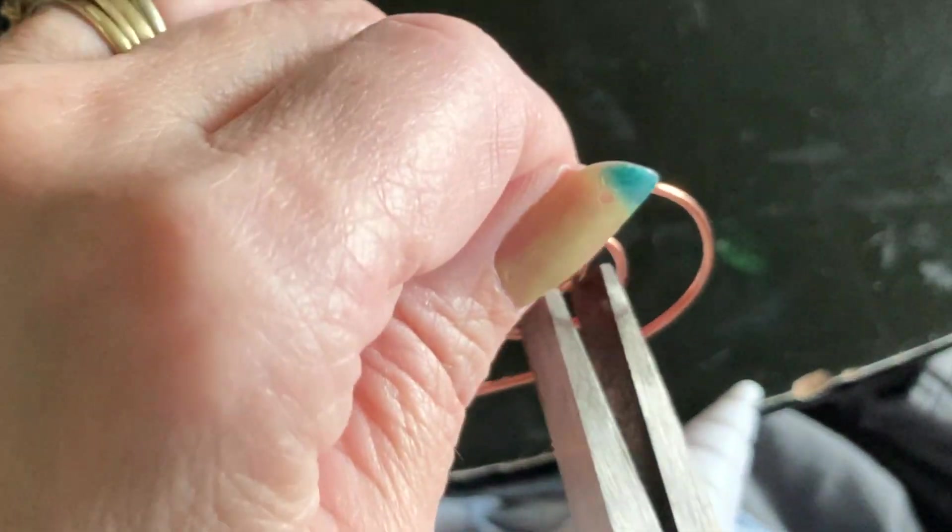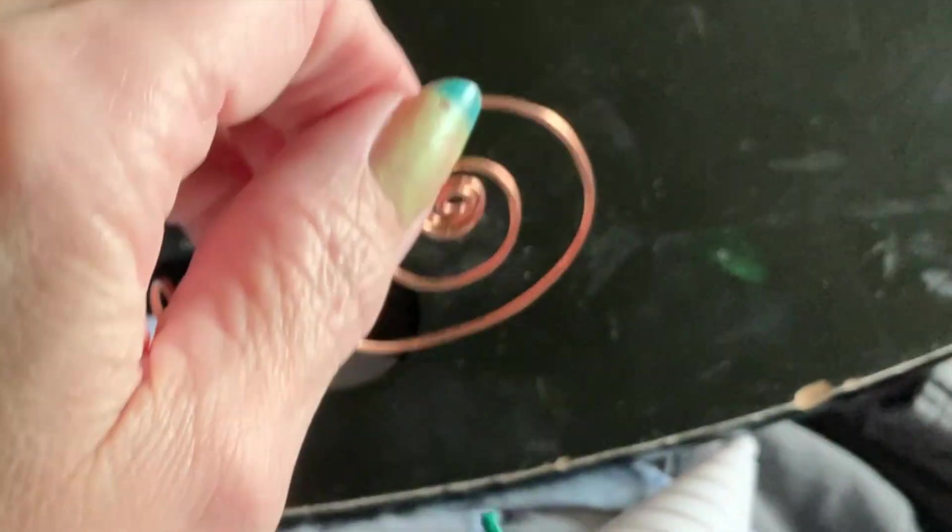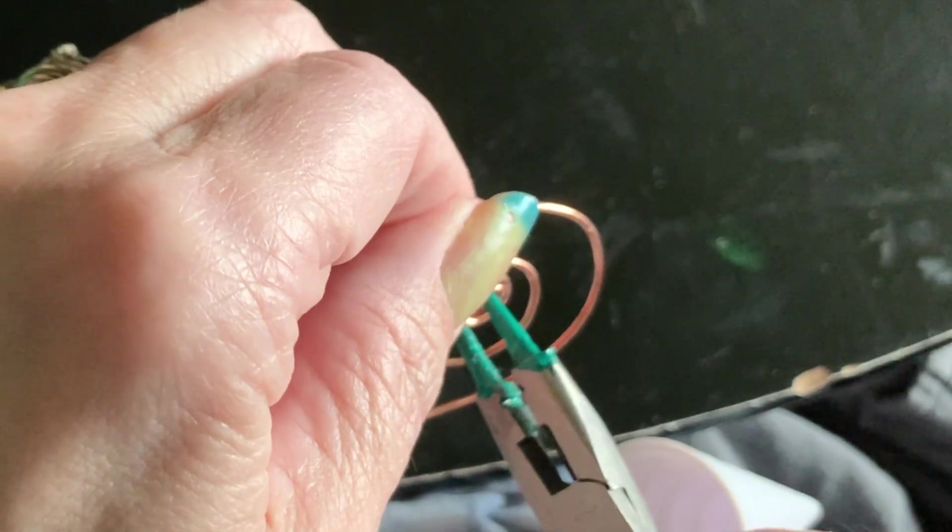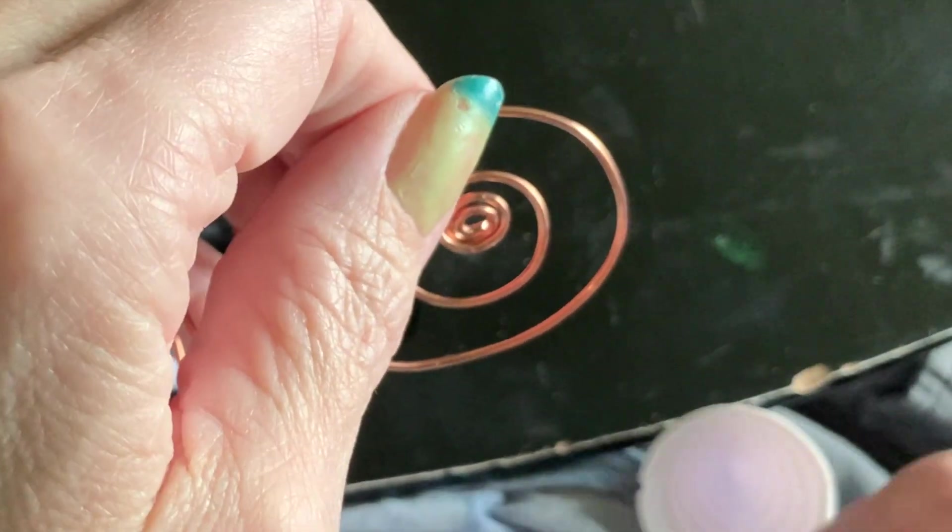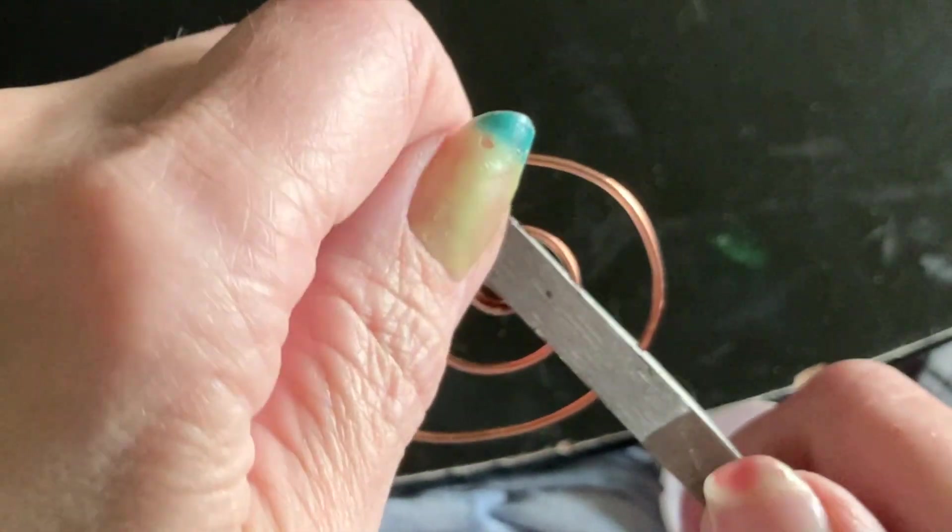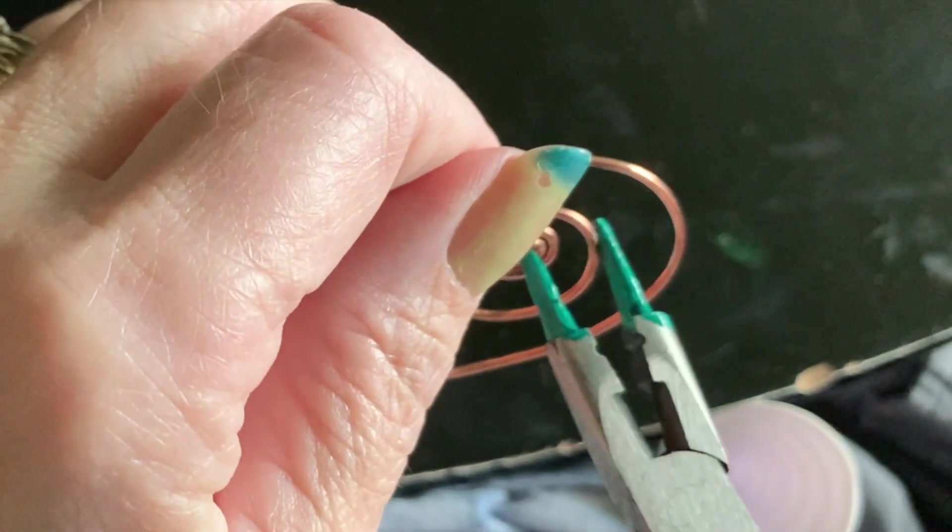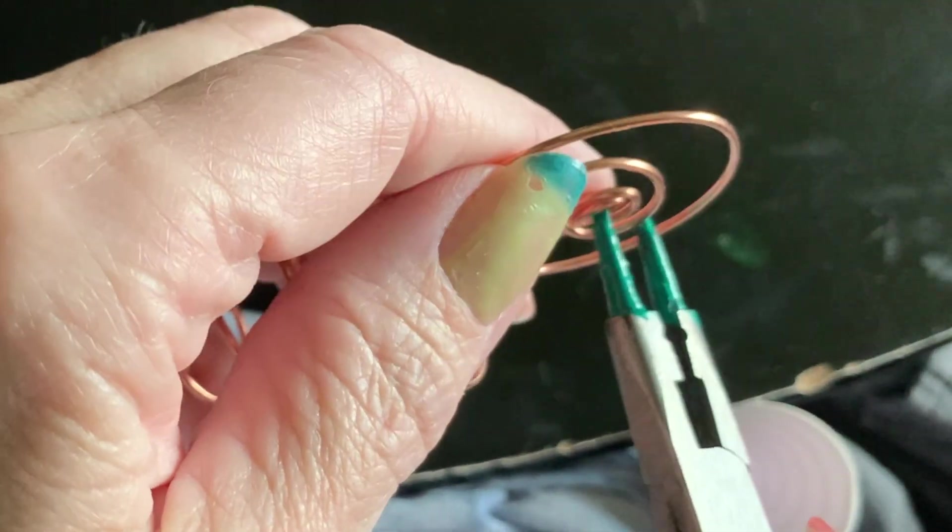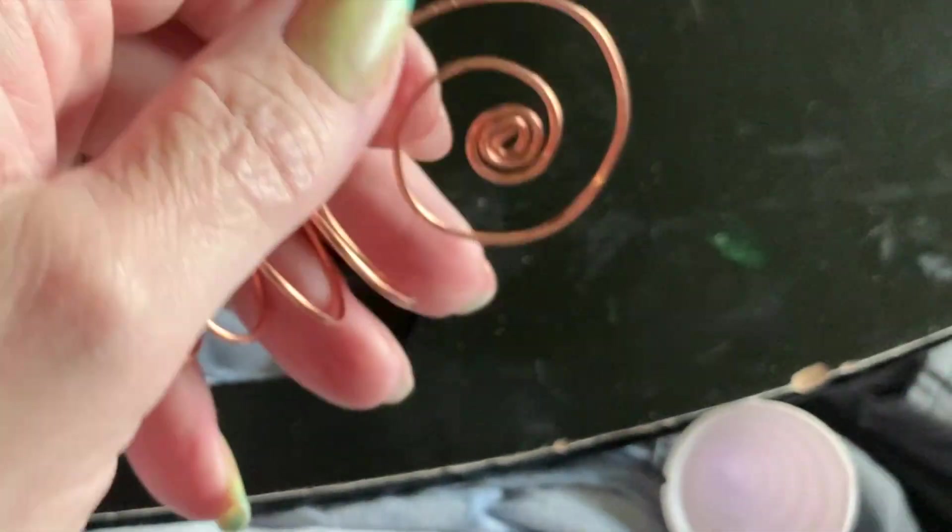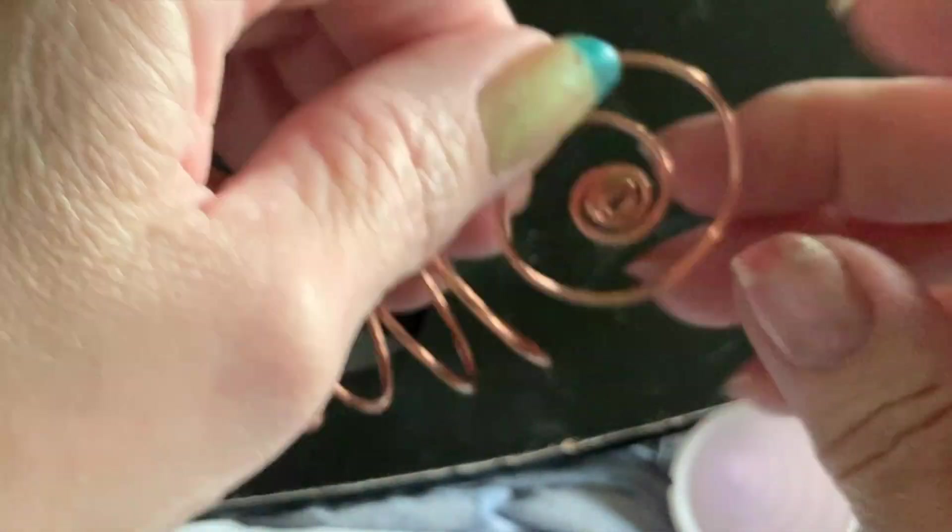I wanted this electroculture coil antenna to be all one piece, so it would just gather the energies and then swirl them into the ground. I didn't want to have any soldering or overlapping of wires. I just wanted one copper coil.